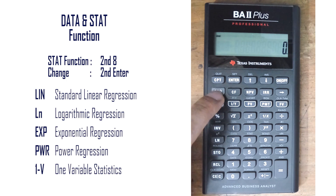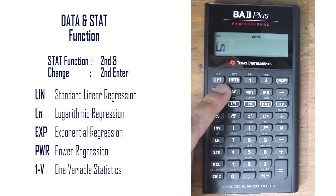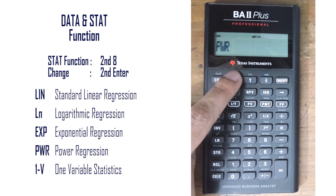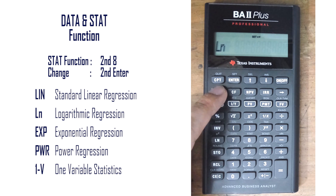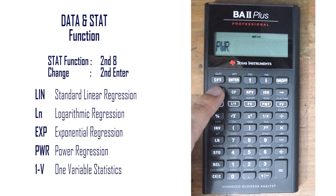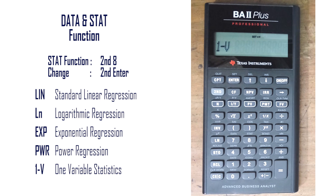We can go to the stat function by pressing Second and 8. There are 5 options which we can change by pressing Second and Enter subsequently. The linear function uses x and y; the ln function uses ln(x) and y; the exponential function uses x and ln(y); the power function uses ln(x) and ln(y); and finally 1-V, which is the one-variable calculation method for probabilities.